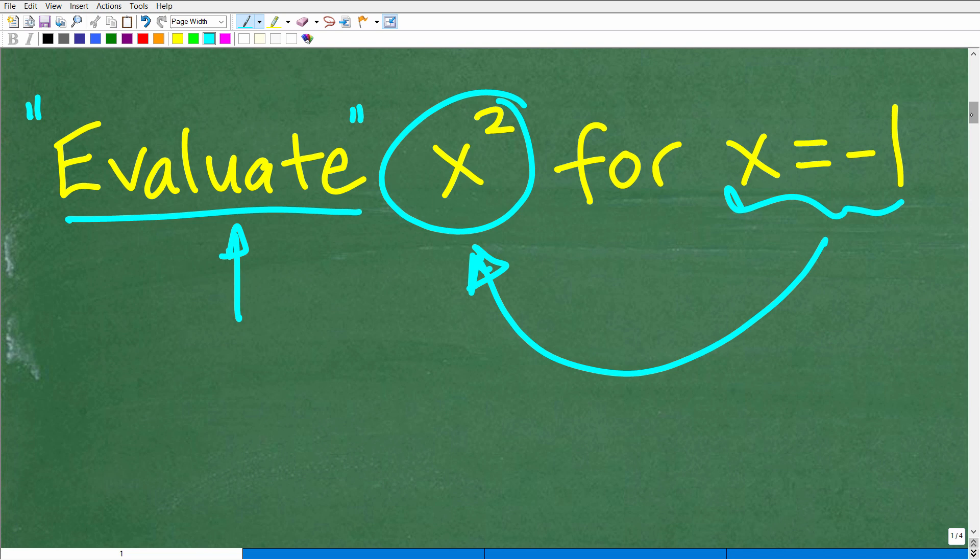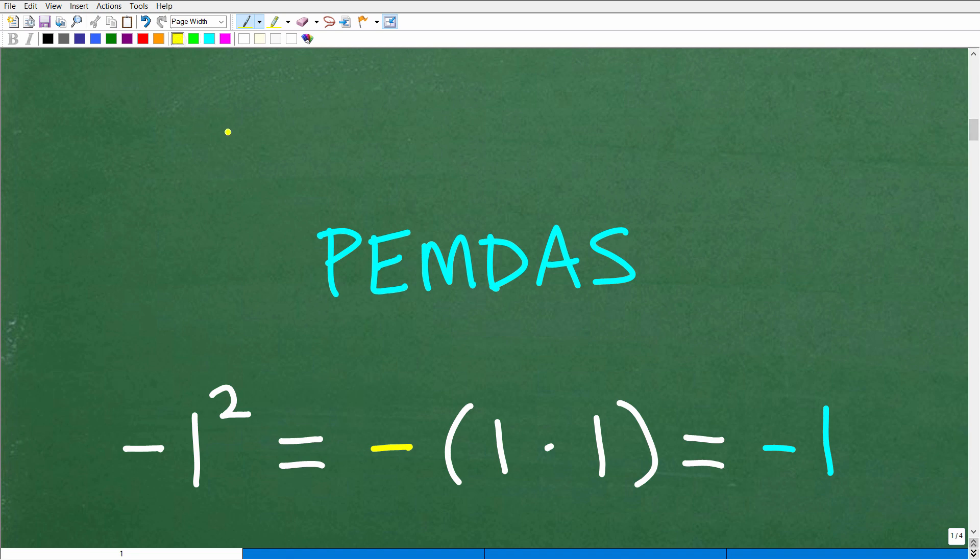So basically this is pretty simple. All we would need to do is take this negative 1, plug it into this, replace this x with negative 1, and then square it. But why is this confusing? Well, I'm going to show you why right now. Okay, so what a lot of students do, they're like, okay, I have x squared and I need to plug in negative 1 for this x squared. So when you do this, replace this x with negative 1, you think that this expression now looks like this: negative 1 squared. And you might be saying, well, isn't that right? I just replaced the x with negative 1. Well, no, this is incorrect.